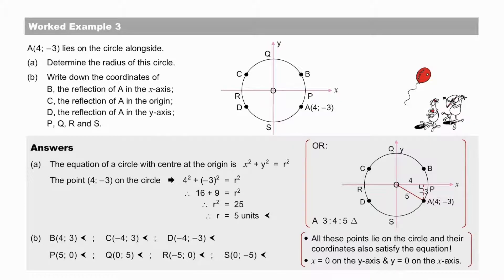To find the reflections of A in the x-axis, in the origin, and in the y-axis, we are able to determine the coordinates of those points. Check your answers for B, C and D. And then, the axis intercepts.